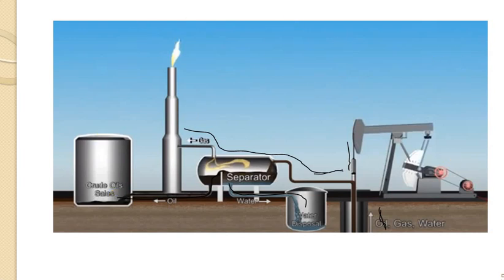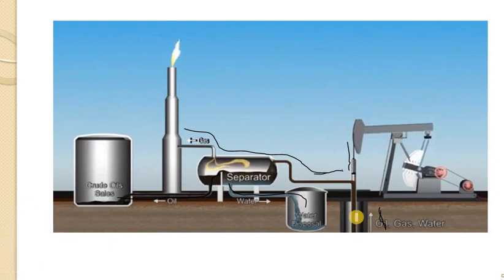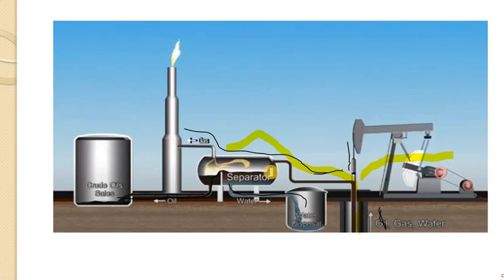This setup shows exactly how oil, gas, and water are collected from the pump sunk deep into the earth's crust or oceans. They come out due to compressed air, and are separated: gas is separated here, water is separated here, and finally the crude oil is sent into its container separately.